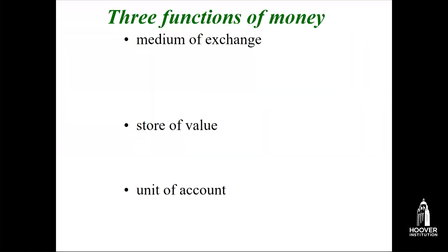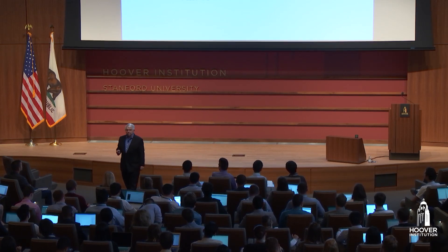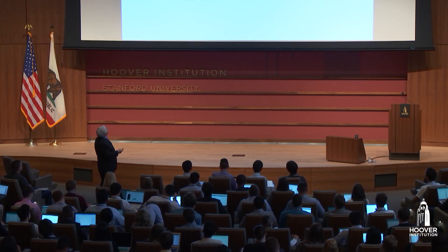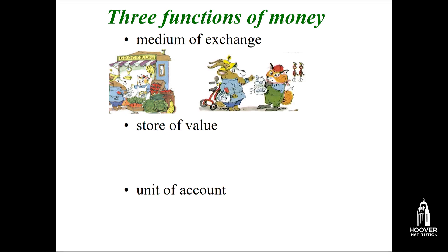A very important concept in economics is the three functions of money. One of my favorite textbooks is written by Richard Scarry. Medium of exchange: Farmer Alfalfa sells produce to Grocer Cat in exchange for money, and buys a toy and earrings for his family from the Blacksmith Fox — that's a medium of exchange. Also a store of value: Farmer Alfalfa takes what he didn't spend and puts it in the bank. Money can't change its value very rapidly — that's one of the problems with Bitcoin.